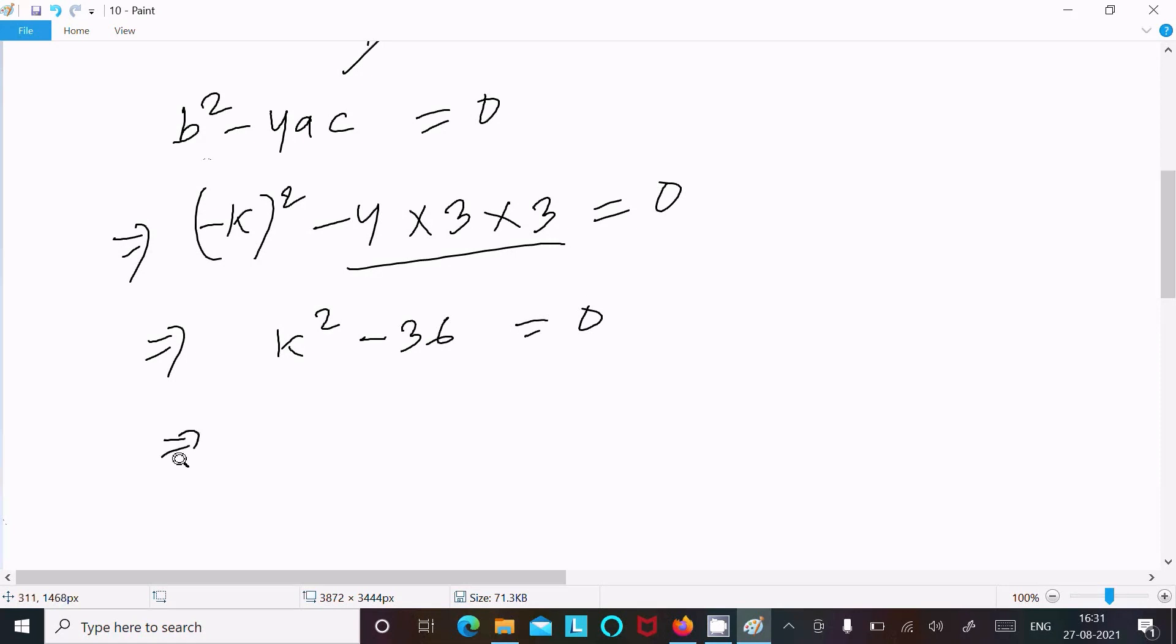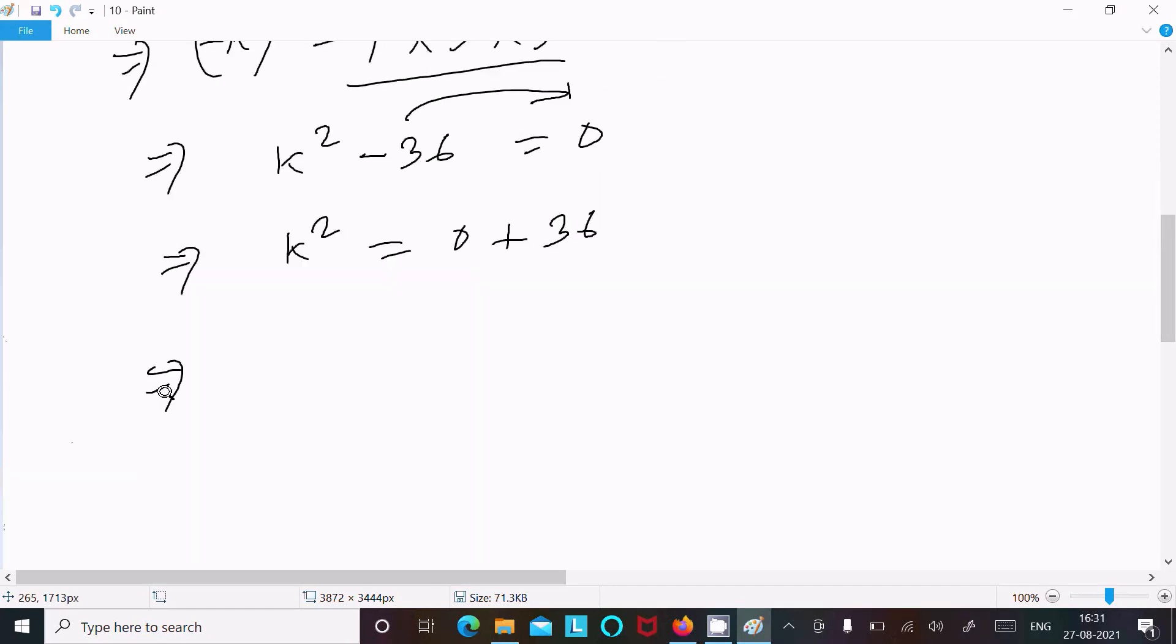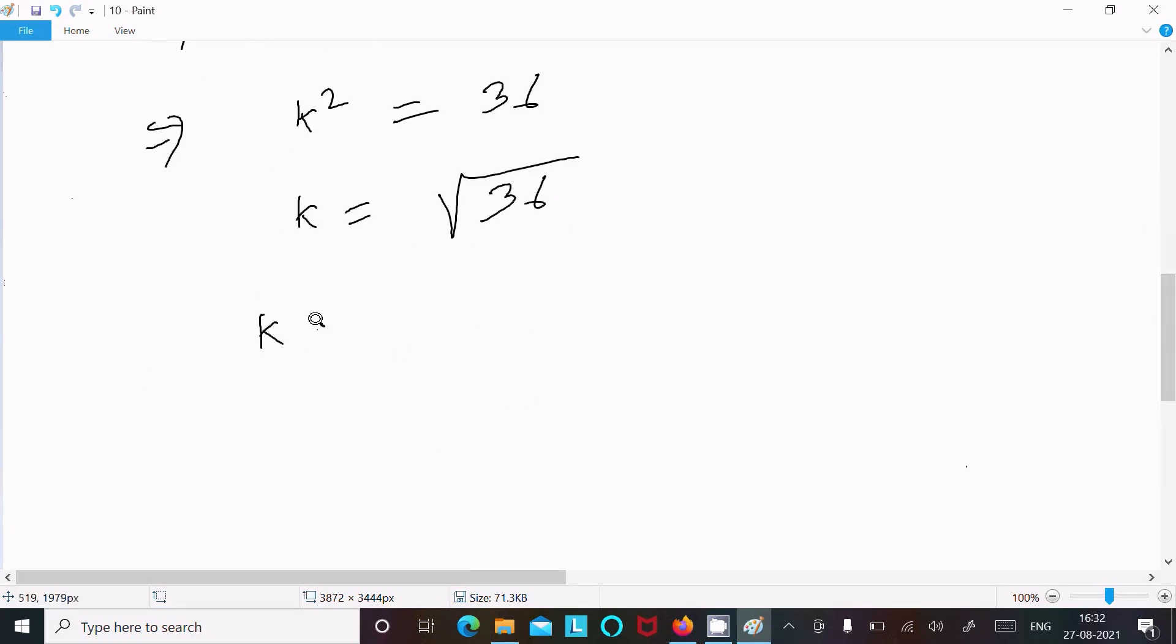Or we can write k^2 by moving this to the right, so it equals 0 + 36. After that, k^2 = 36. Now we can write k = √36, so 36 has two values: plus or minus 6. So k is +6 and -6.